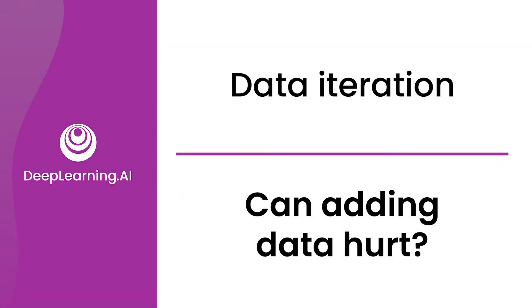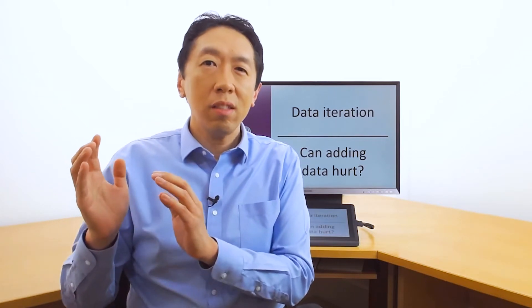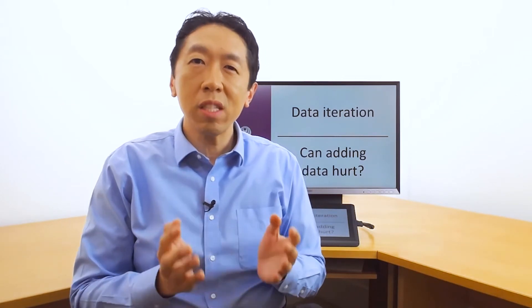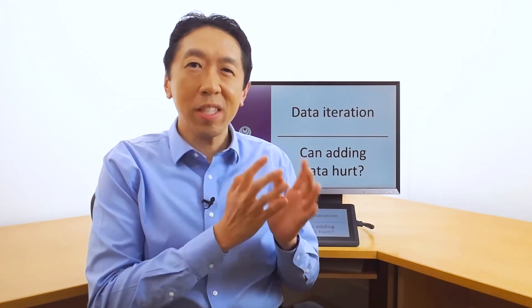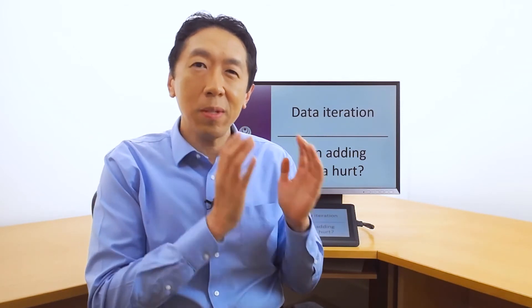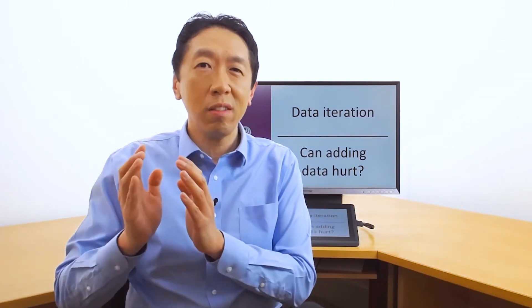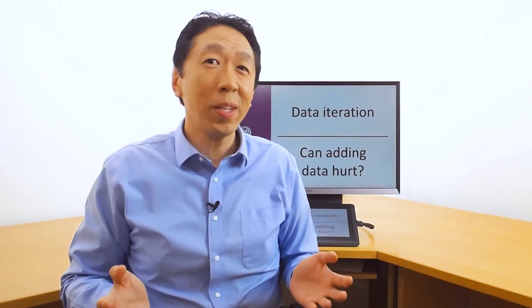For a lot of machine learning problems, the training sets and dev and test set distributions start off being reasonably similar. But if you're using data augmentation, you're adding to specific parts of the training set, such as adding lots of data with cafe noise. So now your training set may come from a very different distribution than the dev set and the test set. Is this going to hurt your learning algorithm's performance?